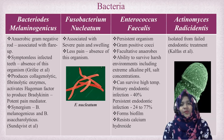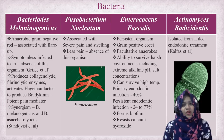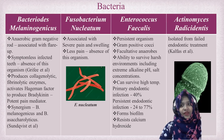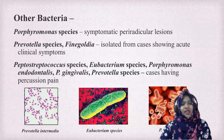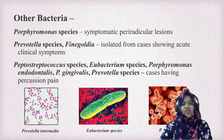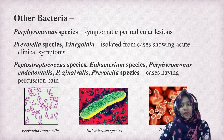There are various bacteria seen in endodontic flare-up root canals: Bacteroides melanogenicus, Fusobacterium nucleatum, Enterococcus faecalis — which is the most important organism seen in failed root canal treatments — Actinomyces radicidentis, and other bacteria such as Porphyromonas species, Prevotella, Peptostreptococcus species, Eubacterium, Porphyromonas endodontalis, Prevotella species, and others. These are all seen in flare-up cases.